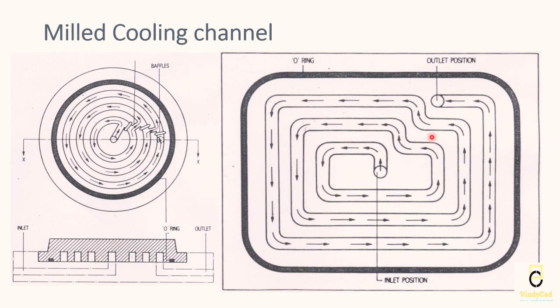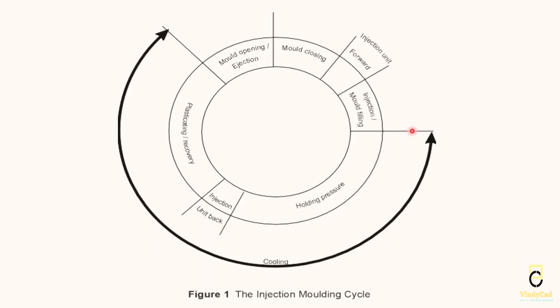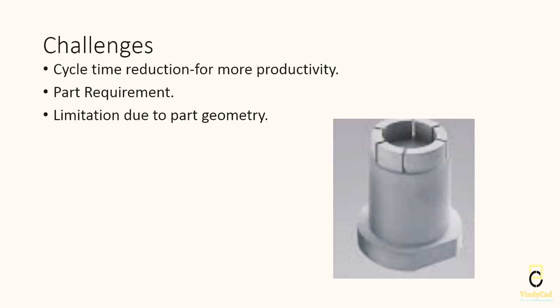This is the milled cooling channel type — most suitable for flat parts. You can see the cross-section of the channel is not round, it is square. You can mill this channel using a milling machine and seal the area with an O-ring, then tighten it to the core plate. In this chart, you can see that 60 to 70 percent of the mold cycle time is consumed by cooling. By this, we can understand that cooling is very important and it consumes most of the mold cycle.